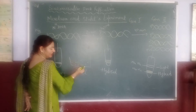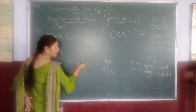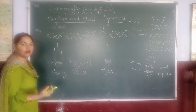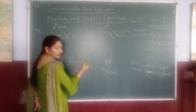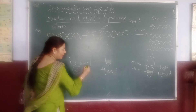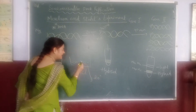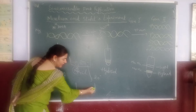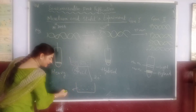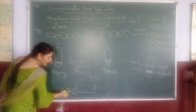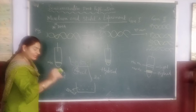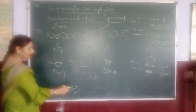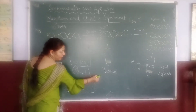So N15 heavy nitrogen was used to grow E. coli bacteria. The DNA was replicated in this N15 medium. After 20 minutes, the bacteria were removed and transferred to a new culture medium. This new medium was N14 type — normal light nitrogen.